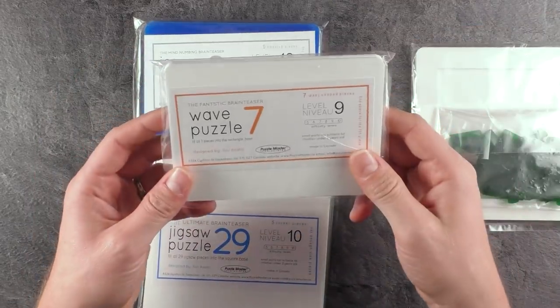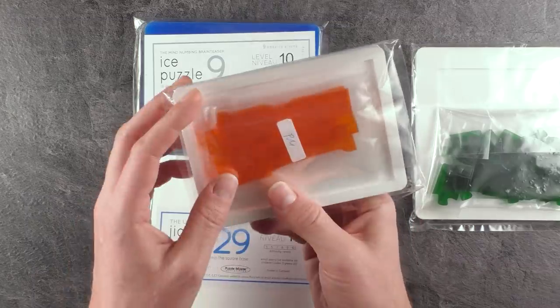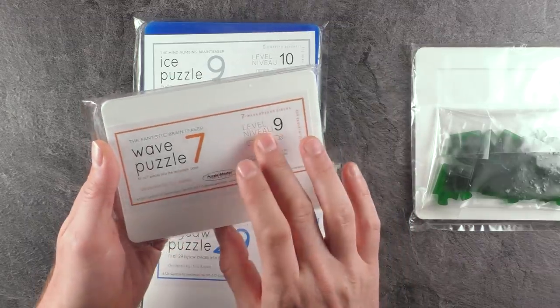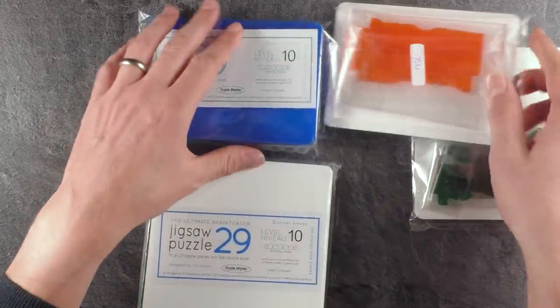Then we got here a level 9 puzzle called the Wave 7 puzzle. Only seven pieces, which is a level 9. Hard to imagine that this is really that difficult, but we will find out.